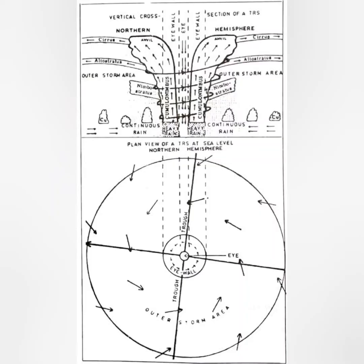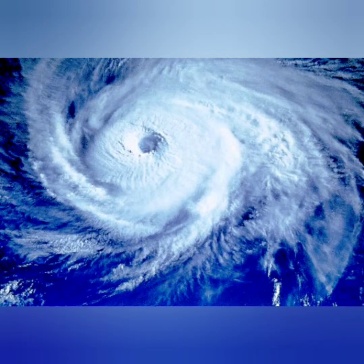TRS is basically a cyclone which is a rotating mass of warm and humid air creating thunderstorm with strong winds. It normally develops between the months of July to October, between latitudes 10 degrees and 30 degrees in the northern and southern hemisphere. The wind speed in the TRS region goes up to 150 knots and it covers an area from 50 nautical miles to 800 nautical miles.